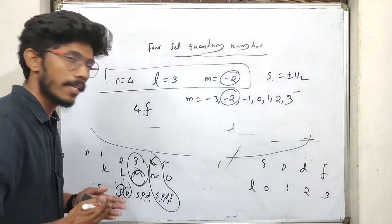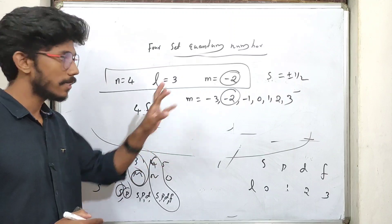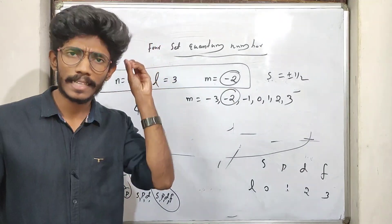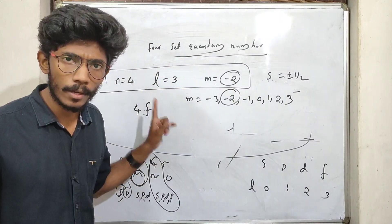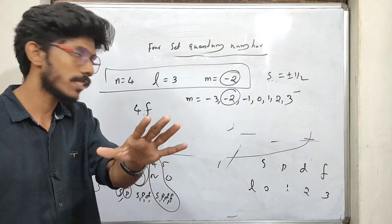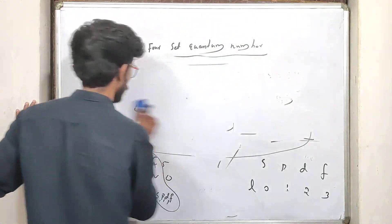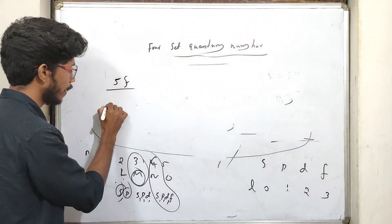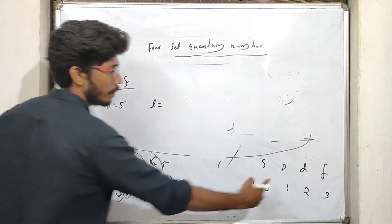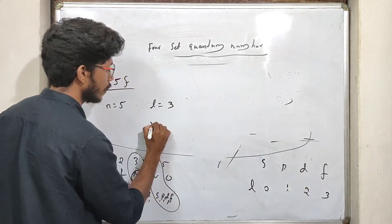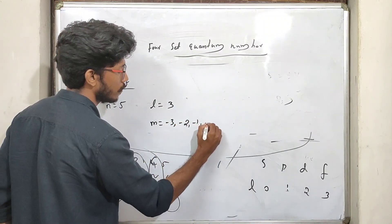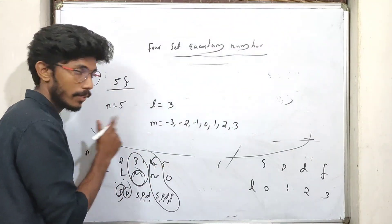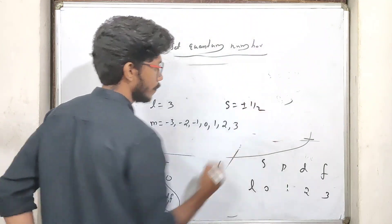If you have any questions in the exam, if you have a quantum number — for example, 5f — write the quantum numbers. For f, L equals 3, and M ranges from minus L to plus L. Then S equals plus or minus half.